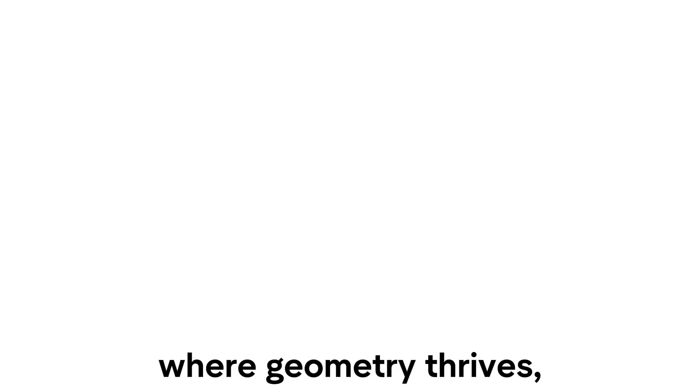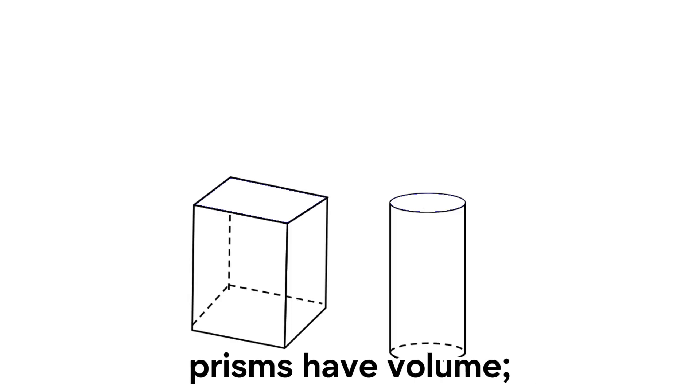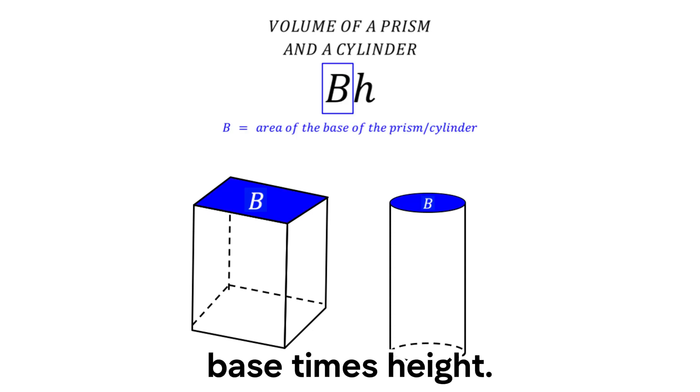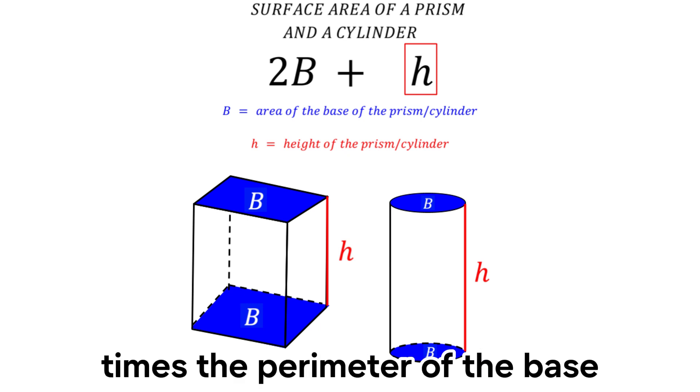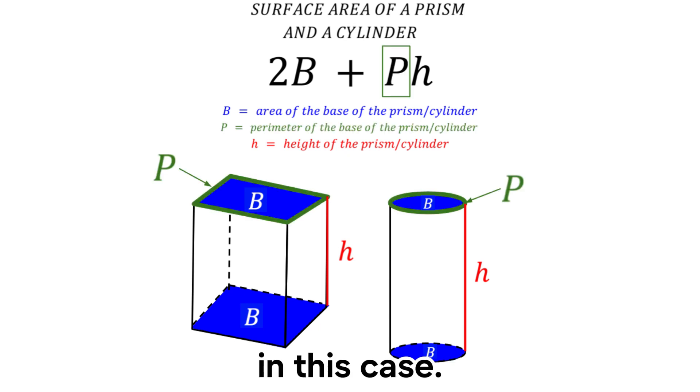In the realm of shapes where geometry thrives, prisms have volume: base times height. Surface area's two times the base plus the height times the perimeter of the base in this case.